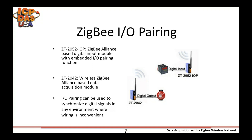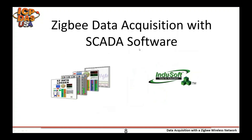Users can easily configure the module address, protocol, checksum, ZTPID, and ZT channel settings using a combination of rotary and DIP switches.